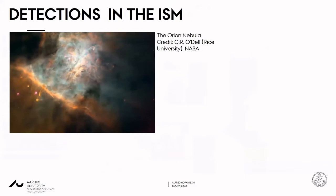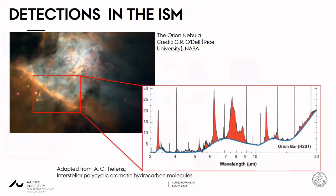When we use observational astronomy to investigate the interstellar medium, we look at regions such as this — the Orion Nebula. When we view it with telescopes such as ALMA, we observe spectra such as this. These red peaks allow you to identify what molecules are in the interstellar medium. These particular ones reveal PAHs present in the Orion bar.